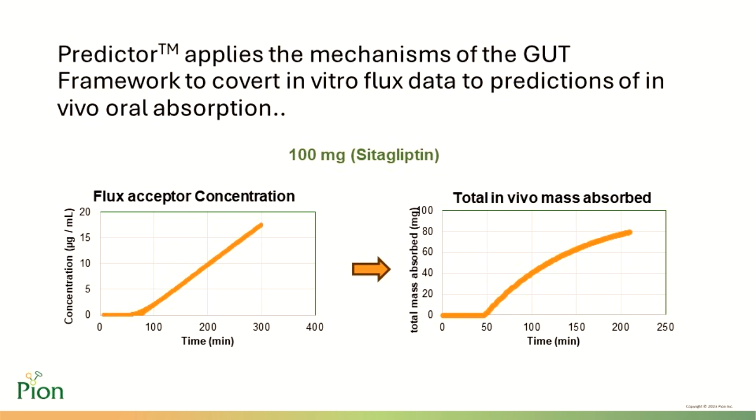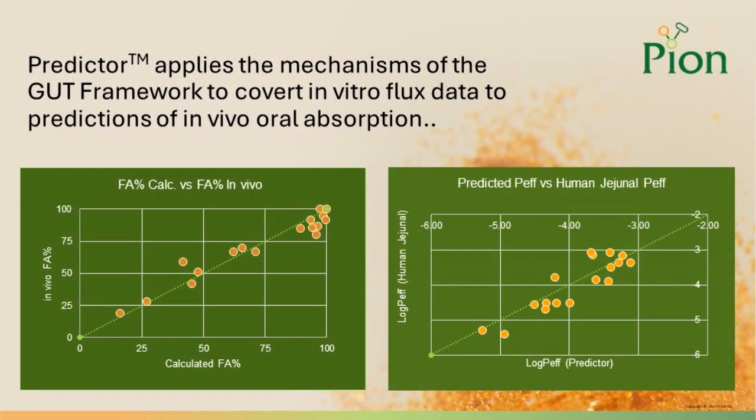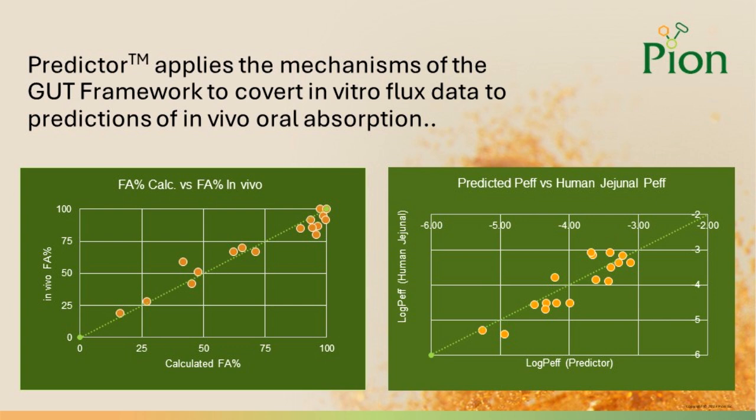Predictor applies the mechanisms of the gastrointestinal unified theoretical framework developed by Professor Kiyohiko Sugano to convert in vitro flux data to predictions of in vivo effective permeability and absorption rate. The example here shows a converted flux acceptor profile of a commercial formulation of sitagliptin, one of our test samples during the validation of the Predictor absorption model. Over 35 pure APIs and drug products have been tested to validate the Predictor modeling concept.